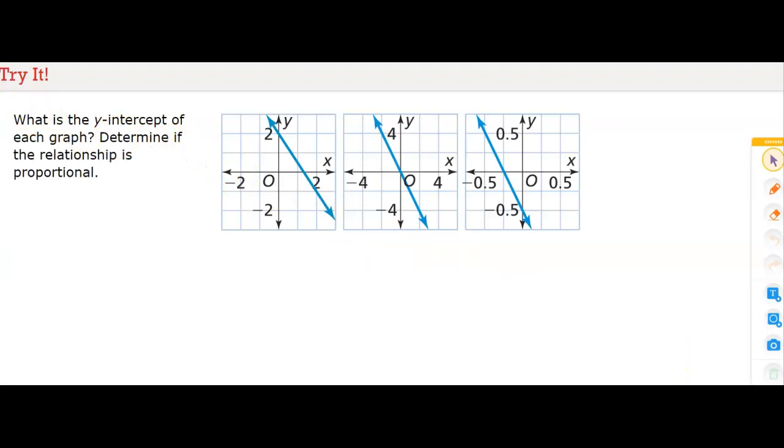What is the y-intercept of each graph? Determine if the relationship is proportional. The first graph has a y-intercept of two and is not proportional. The second one does cross through the origin, so the y-intercept is zero and it is proportional. The last one has a y-intercept of about negative 0.25 and is not proportional because it's not going through the origin.